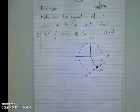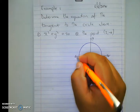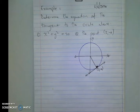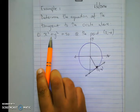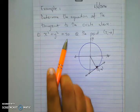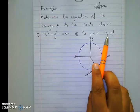Hi guys, this is for the learners. The example here is to determine the equation of the tangent to the circle where x squared plus y squared equals 20 at the point (2, -4).